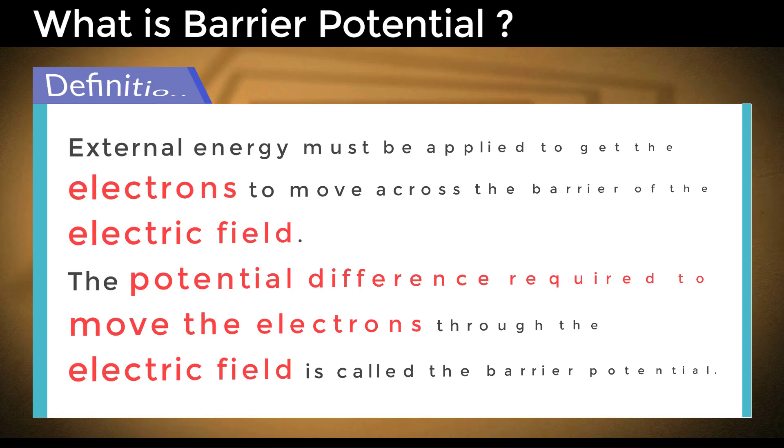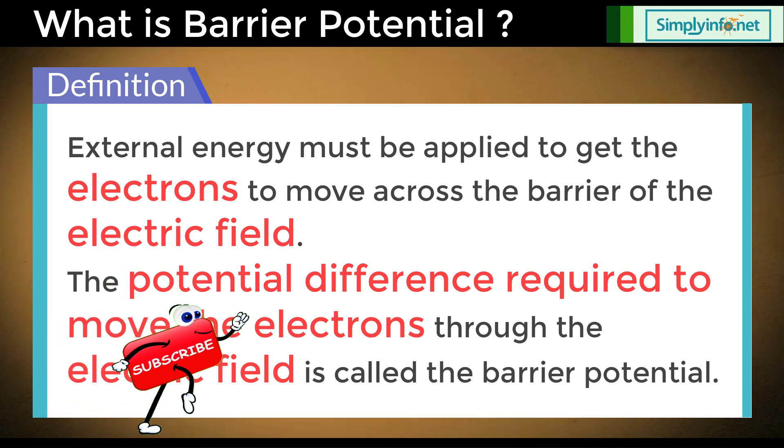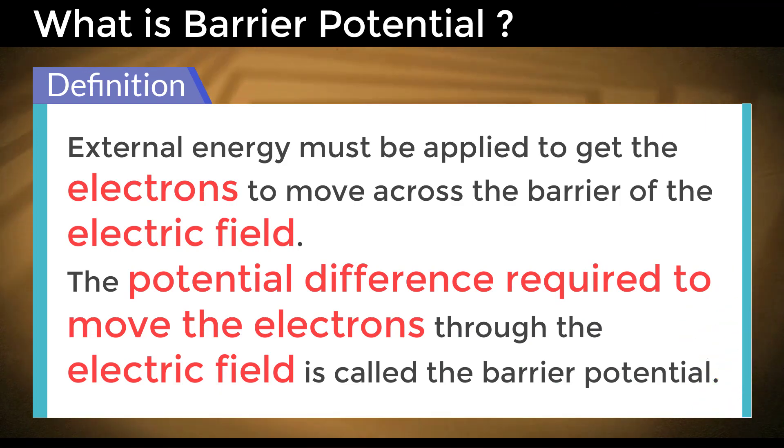Barrier Potential. The electric field formed in the depletion region acts as a barrier. External energy must be applied to get the electrons to move across the barrier of the electric field. The potential difference required to move the electrons through the electric field is called the Barrier Potential.